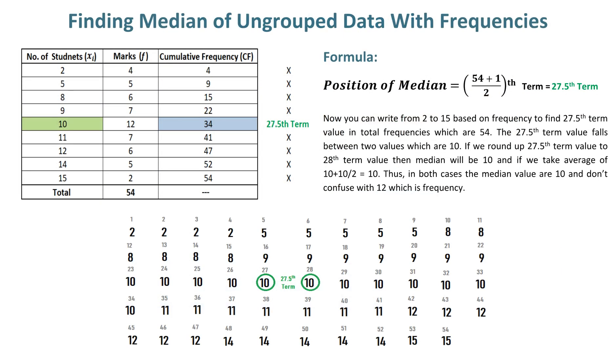Finding median of ungrouped data with frequencies. The total frequencies are 54. By putting 54 in the position of median formula for ungrouped data, we get the 27.5th term. Now you can write from 2 to 15 based on frequency to find the 27.5th term value in the total frequencies of 54.